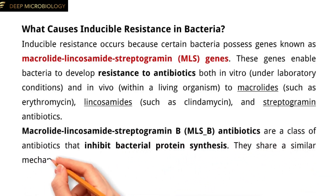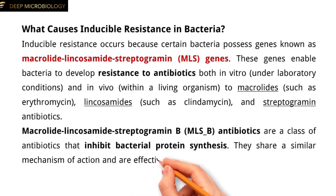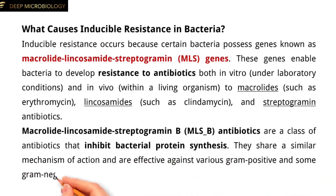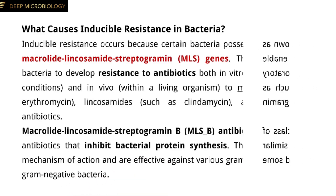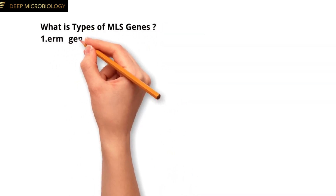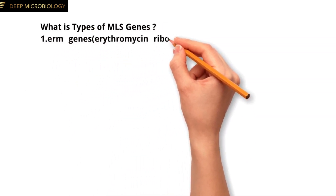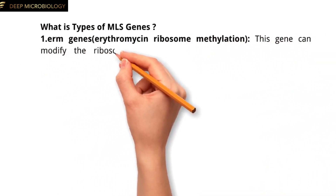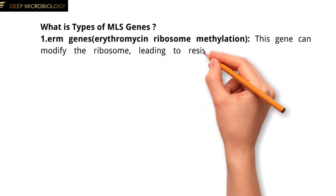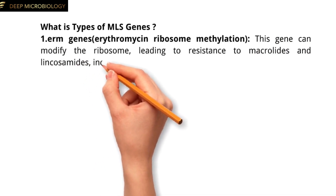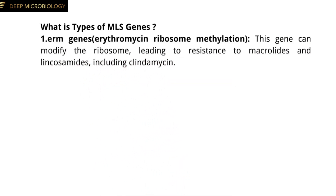MLSB antibiotics share a similar mechanism of action and are effective against various gram-positive and some gram-negative bacteria. The first type of MLS gene is the ERM gene, erythromycin ribosome methylation. This gene can modify the ribosome, leading to resistance to macrolides and lincosamides, including clindamycin.